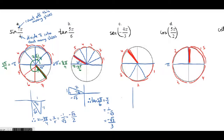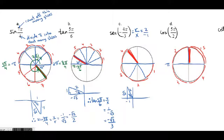This one looks like a 60° angle, which is π/3. The triangle sides are 1, √3, and 2, with x being negative. Secant is defined as r/x, so sec(−4π/3) = 2/(−1) = −2.